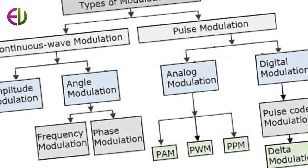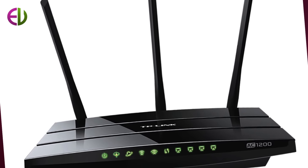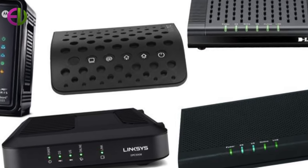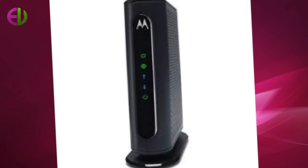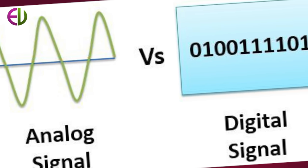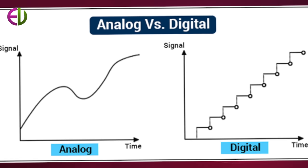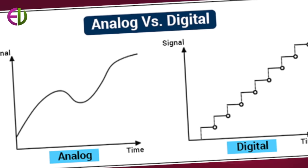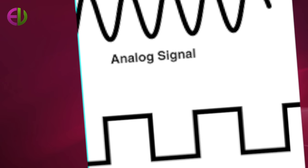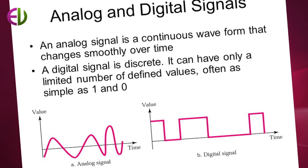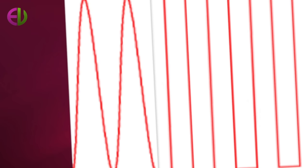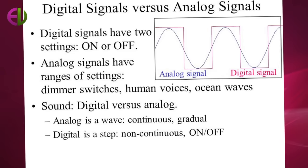Early attempts at building computers used analog techniques, but accuracy and reliability were not good enough. Today, almost all computers are digital. The term digital describes any system based on discontinuous data or events. Computers are digital machines because at their most basic level, they can distinguish between just two values, 0 and 1, or off and on. There is no simple way to represent all the values in between, such as 0.25. All data that a computer processes must be encoded digitally as a series of 0s and 1s.